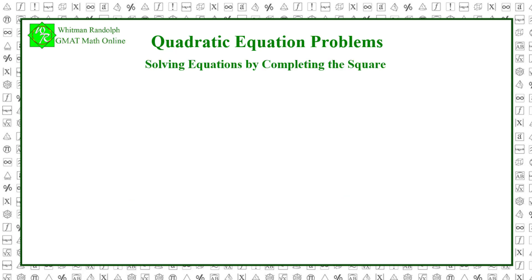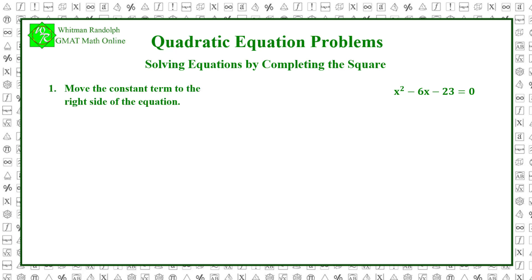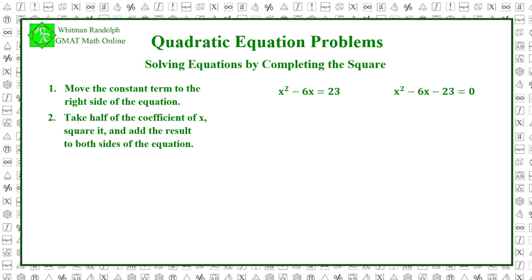Now, let's look at solving equations by completing the square. Consider this equation: x squared minus 6x minus 23 equals 0. This equation cannot be solved through simple factoring, but it can be solved through a process known as completing the square. Step 1: Move the constant term to the right side of the equation — x squared minus 6x equals 23. Step 2: Take half of the coefficient of x, square it, and add the result to both sides. x squared minus 6x plus (6 over 2) squared equals 23 plus (6 over 2) squared. Step 3: Simplify — x squared minus 6x plus 9 equals 23 plus 9.